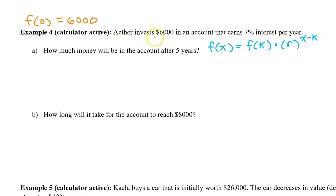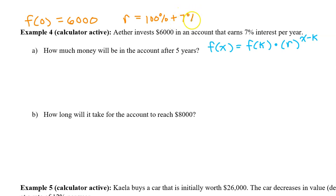Since Aether initially invests $6,000, f(0) is 6,000 — that will be our f(k). But what about the common ratio r? When you are given the constant percent increase of an exponential function, you can find the common ratio r by starting with 100% and then adding the percent increase, in this case 7%. That gives us a total of 107%. But when you plug this into the formula, you want to use a decimal, which would be 1.07. You basically move the invisible decimal point twice to the left.